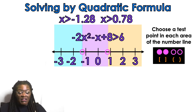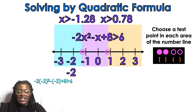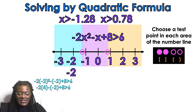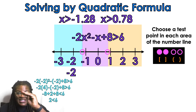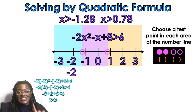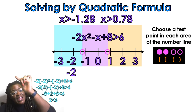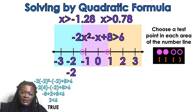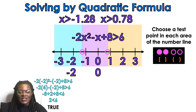We have to choose a test point in each area. For the blue area, we choose negative 2 and plug it into the original problem. Simplifying using PEMDAS, we get 2 is less than 6 — is that a true statement? Yes, it is true.